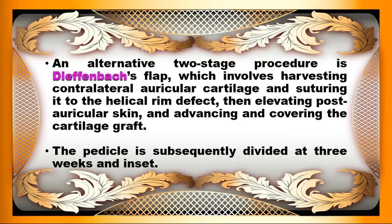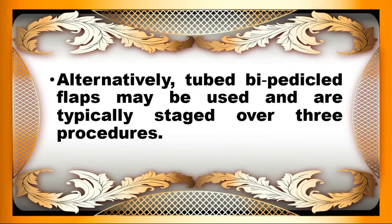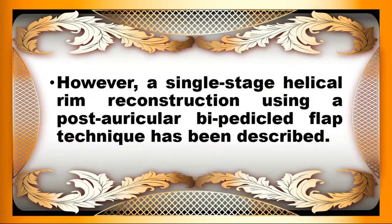An alternative two-stage procedure is the Diffenbach flap, which involves harvesting contralateral auricular cartilage and suturing it to the helical rim defect, then elevating posterior skin and advancing it to cover the cartilage graft. The pedicle is subsequently divided at 3 weeks and inset. Alternatively, tubed bipedical flaps may be used and are typically staged over 3 procedures. However, a single-stage helical rim reconstruction using a post-auricular bipedical flap technique has also been described.